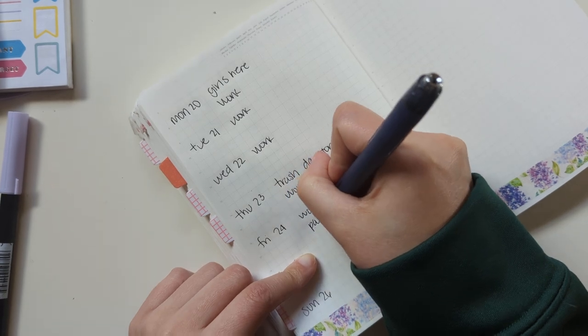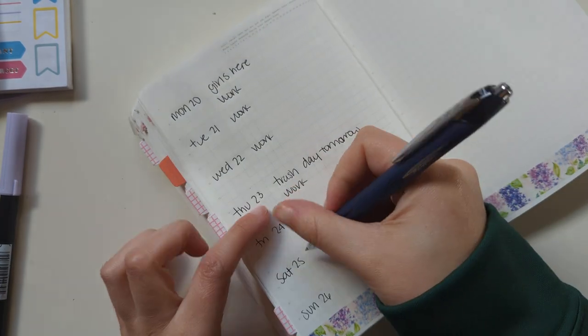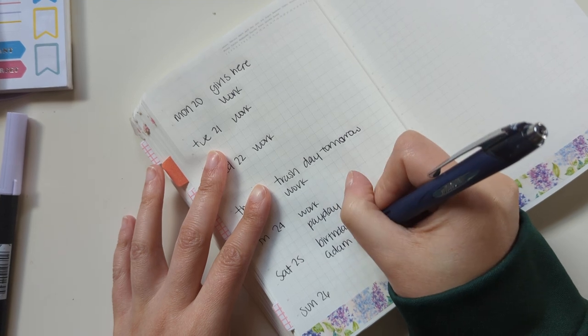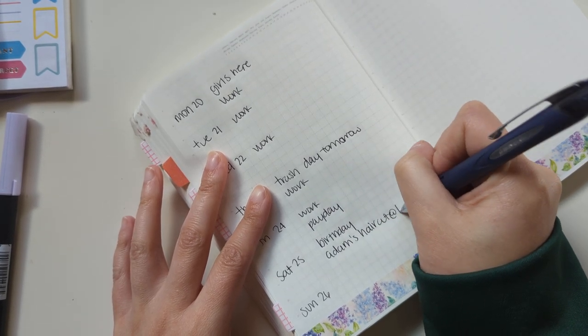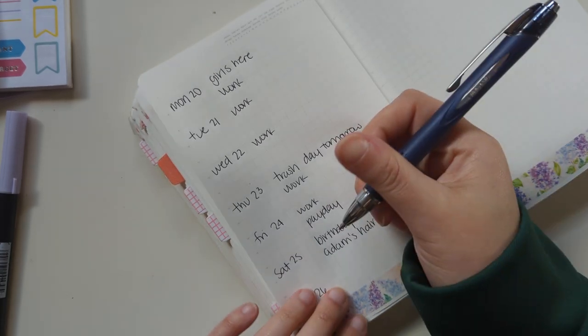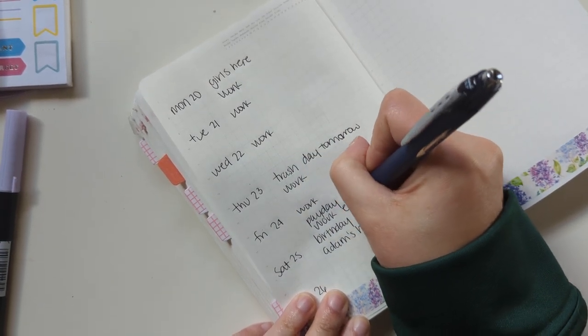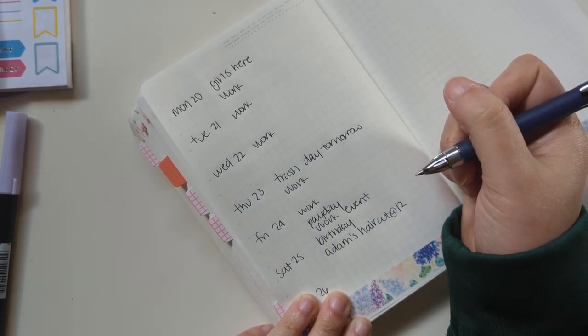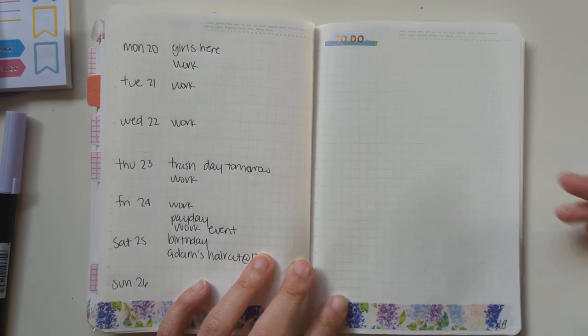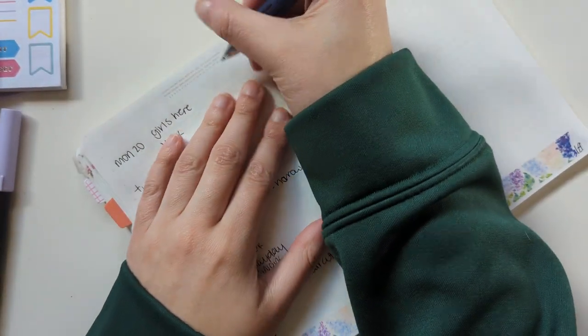Friday is a payday. And Saturday is my birthday. My boyfriend has a haircut on Saturday. And that is about it. There's a work event on Friday, and I'm going to mark something about that, just so I remember. And I think it's 12 to 2, but I'm just going to leave it.